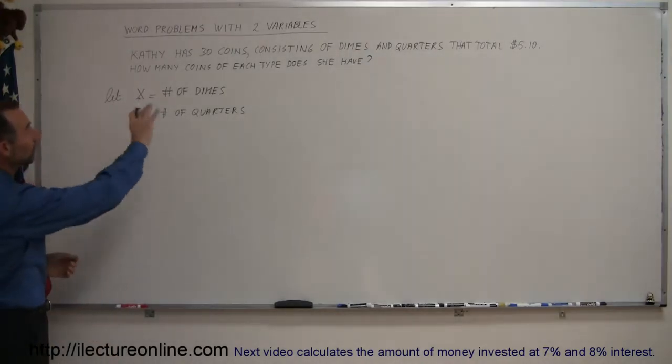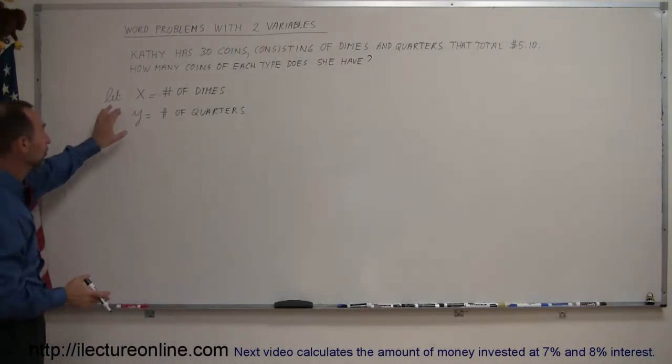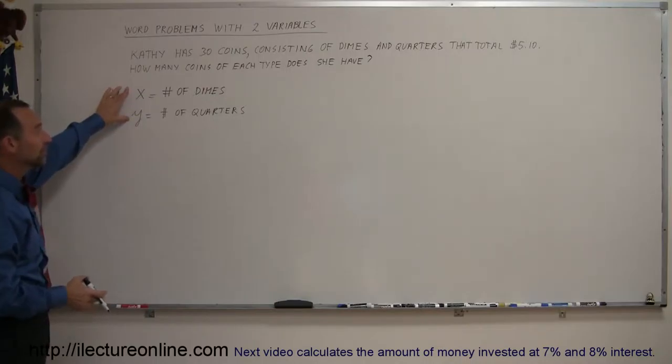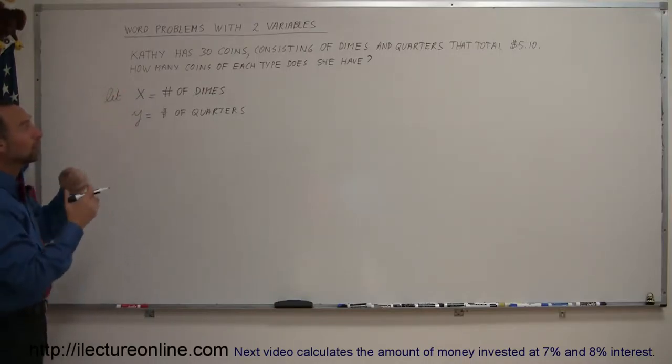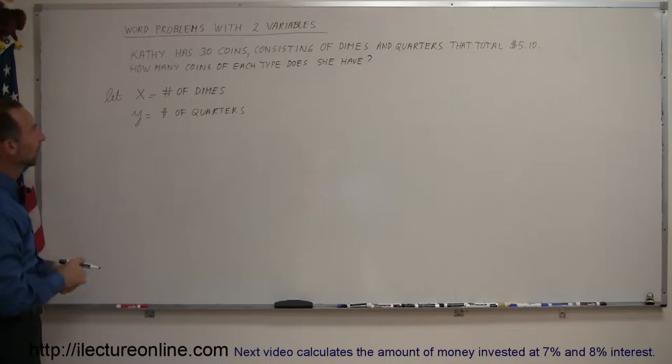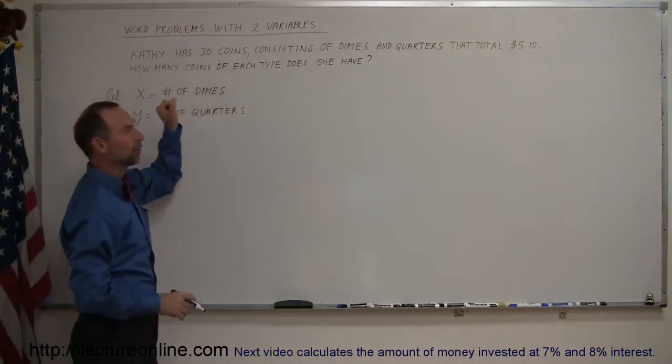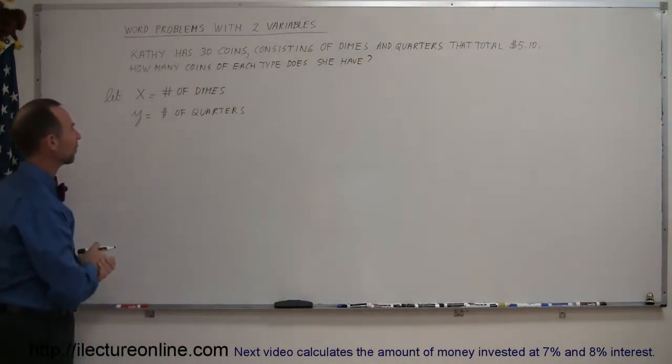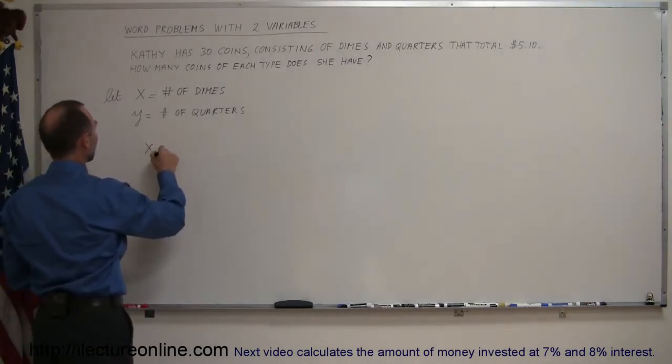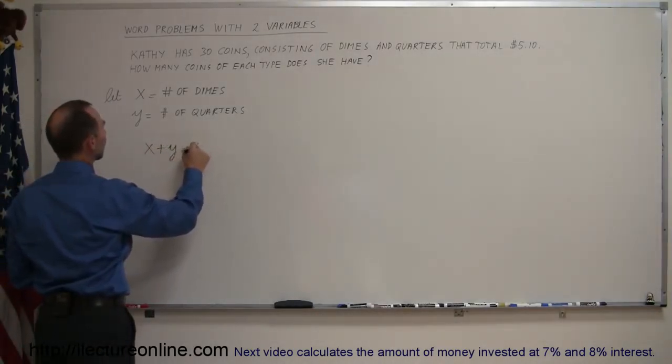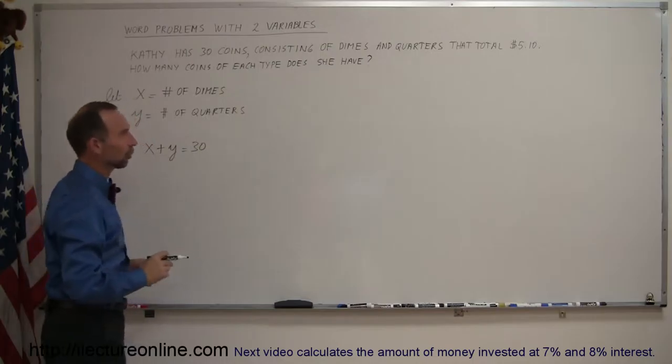We should look in the problem to find information to come up with two equations, since there are two unknowns, two variables. We need to find two equations to relate the two variables with each other. It says here that Kathy has 30 coins, and since she only has dimes and quarters, that means that the number of dimes, x, plus the number of quarters, y, should add up to 30. And there's our first equation.